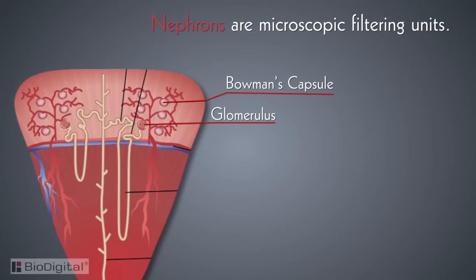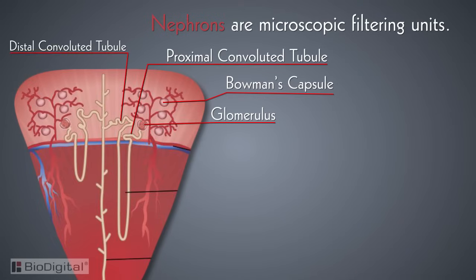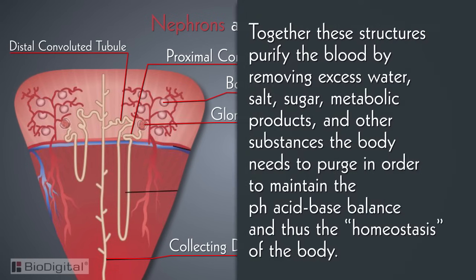These filtering units are composed of the following structures: a glomerulus, a Bowman's capsule, a proximal convoluted tubule, a distal convoluted tubule, and a collecting duct. Together, these structures purify the blood by removing excess water, salt, sugar, metabolic products, and other substances the body needs to purge in order to maintain the pH acid-base balance and thus the homeostasis of the body.